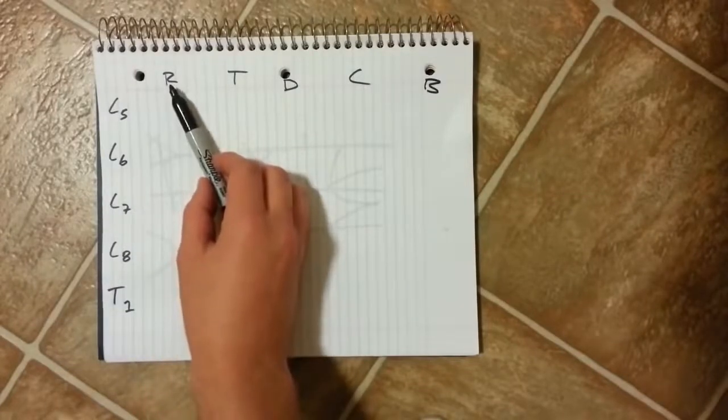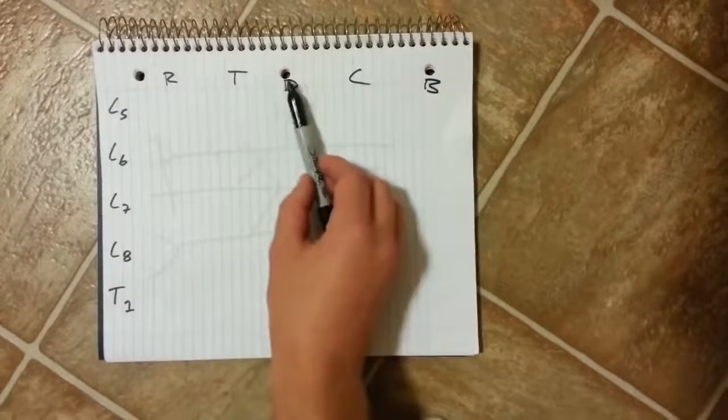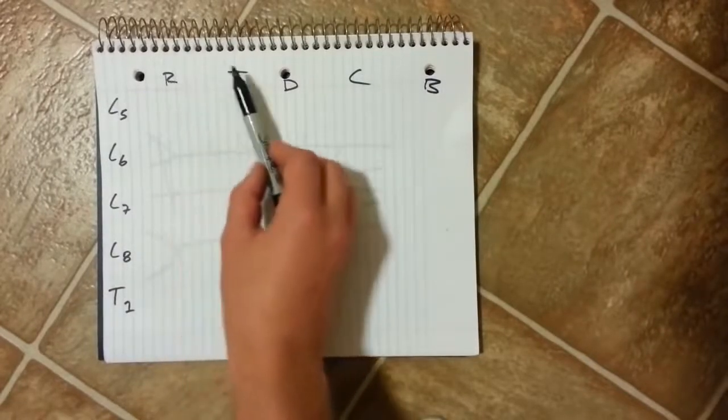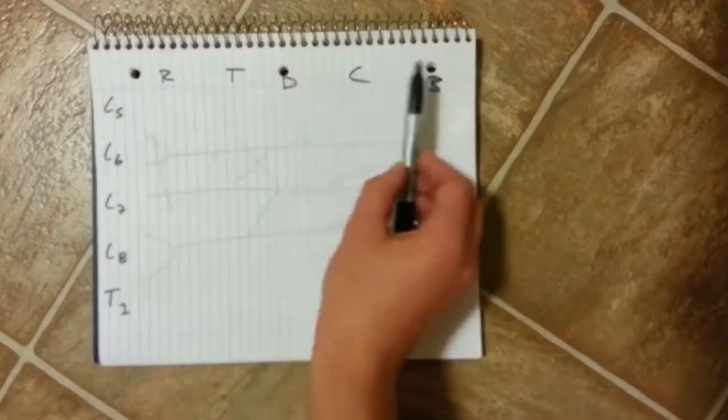Then across the top I use the acronym Remember to Drink Cold Beer. And that stands for Roots, Trunks, Divisions, Chords, and Branches.